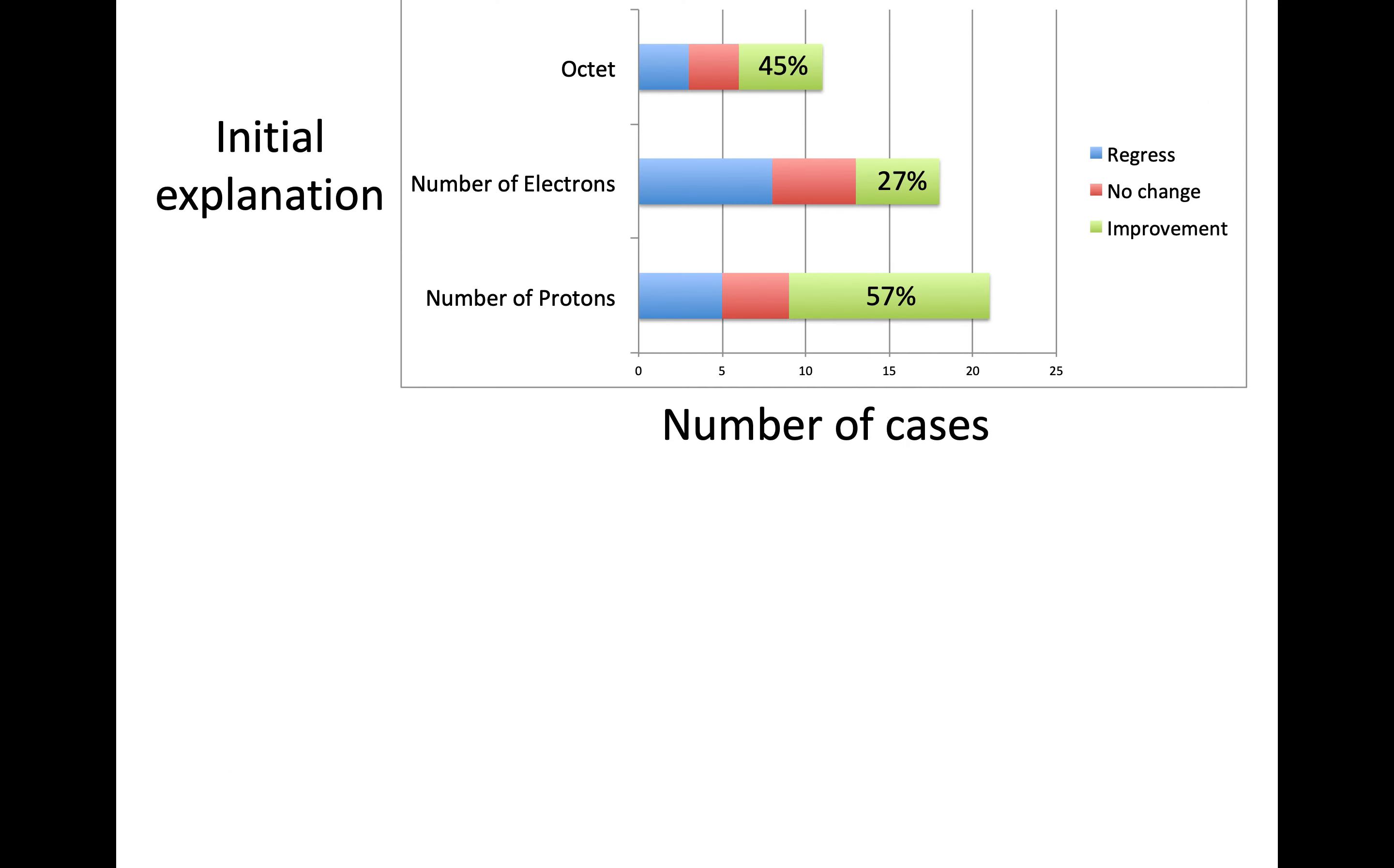Can I change students' perspective? Can I change what they use in their argument? I looked at whether their initial explanation focused on octets, number of electrons, or number of protons. Then I examined whether there was improvement shown in green, whether they offered the same explanation, or regressed. If the initial explanation was in terms of protons, that's great.